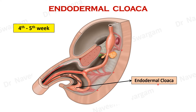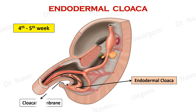Let's see the changes happening around the endodermal cloaca. Its caudal end is closed by a bilaminar membrane known as cloacal membrane, which is composed of outer ectoderm and inner endodermal layers.